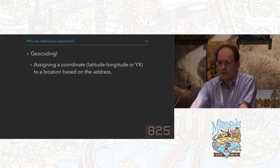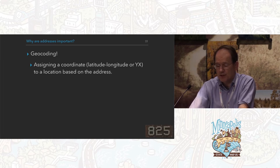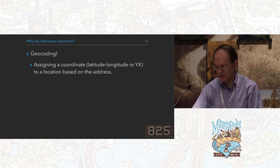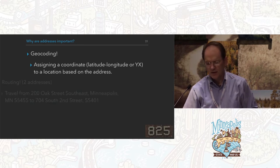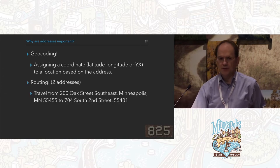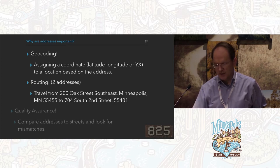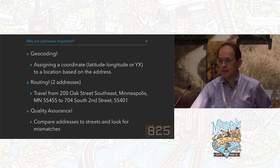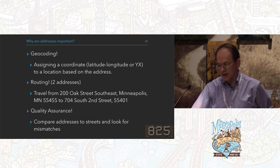Why are addresses important? Three things: geocoding — assigning a coordinate to an address; routing — how do you get from address A to address B; and my personal favorite, quality assurance. There's a lot you can do when you start comparing two sets of data — basically the streets and the addresses — and look for mismatches.